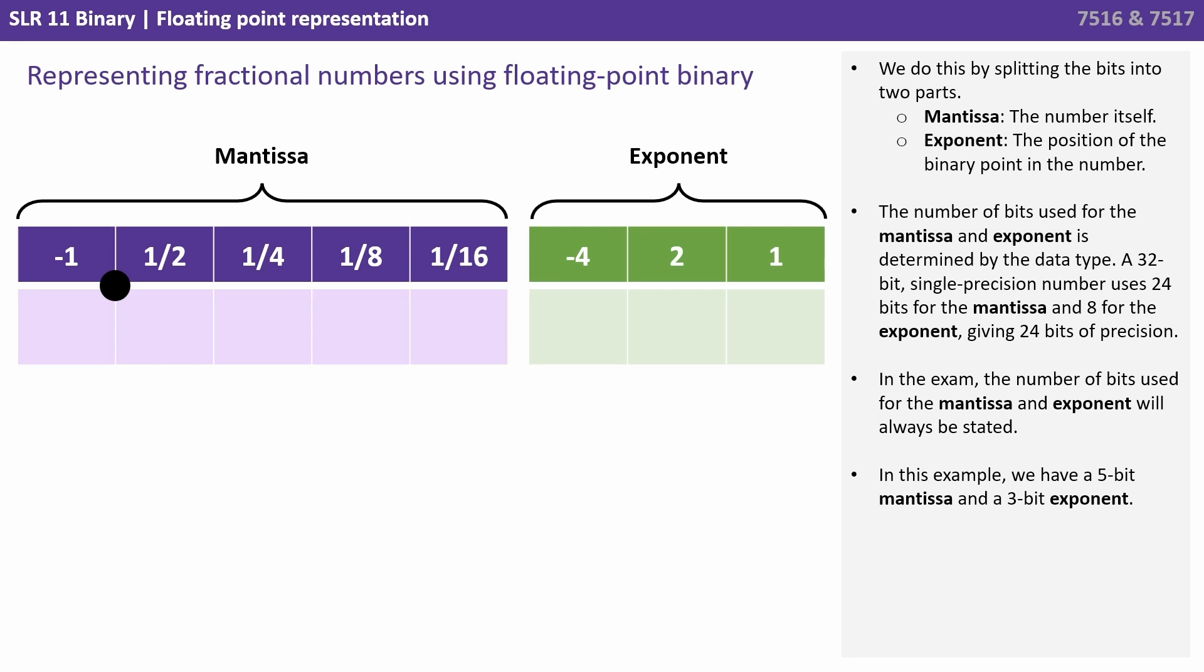The number of bits used for the mantissa and exponent is determined by the data type. A 32-bit single precision number, for example, uses 24 bits for the mantissa and 8 for the exponent, giving 24 bits of precision. In the exam, the number of bits used for the mantissa and exponent will always be stated. In this example, we've used a 5-bit mantissa and a 3-bit exponent.